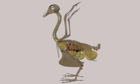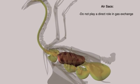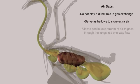These nine air sacs are extremely thin-walled and do not play a direct role in gas exchange. Instead, they serve as bellows to bring air into the bird and store it until expiration. They allow a continuous stream of air to pass through the lungs in a one-way flow, thus producing the most efficient respiratory system of any vertebrate.